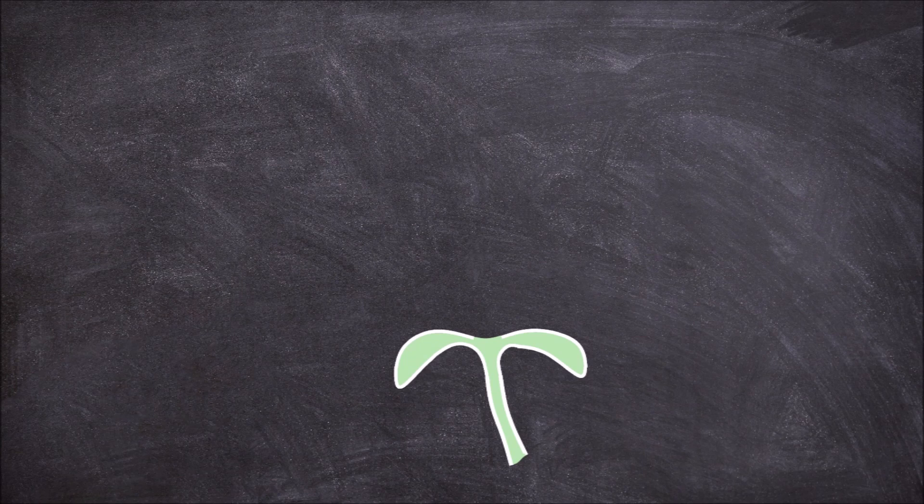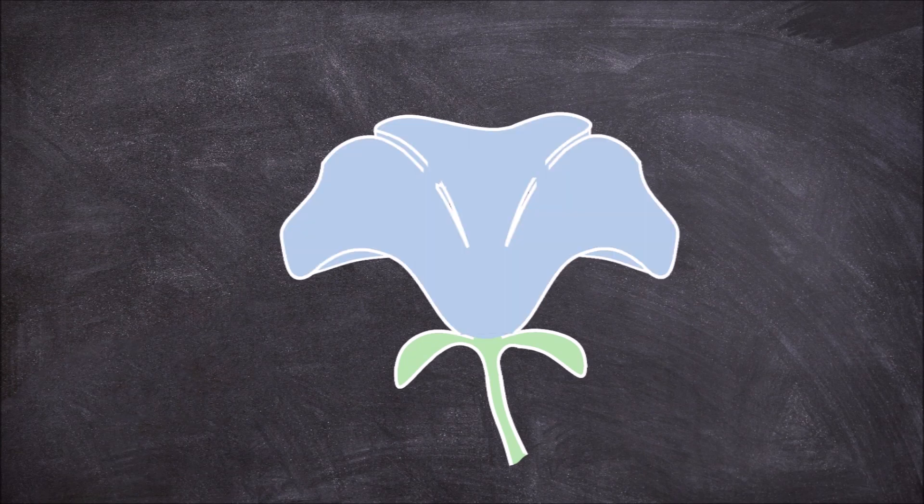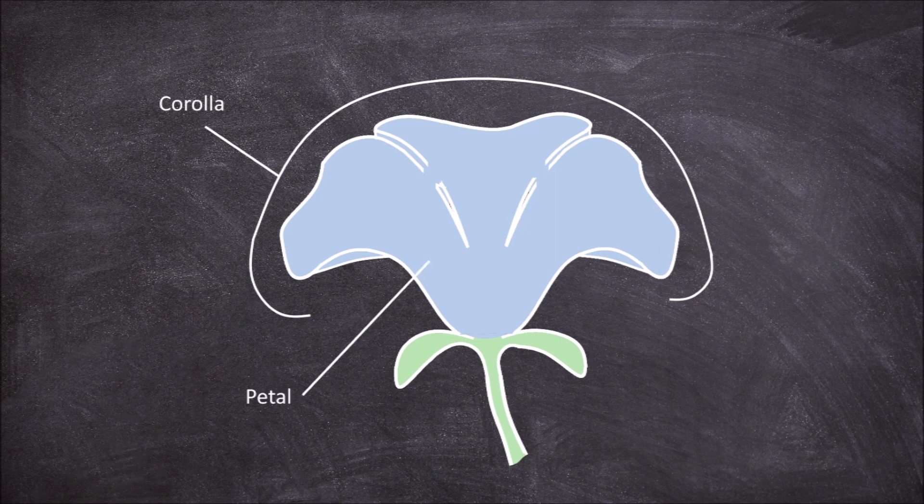The second whorl to develop is the petal whorl, called the corolla. This whorl consists of the often colorful petals of the flower. The calyx and corolla make up what is called the perianth.